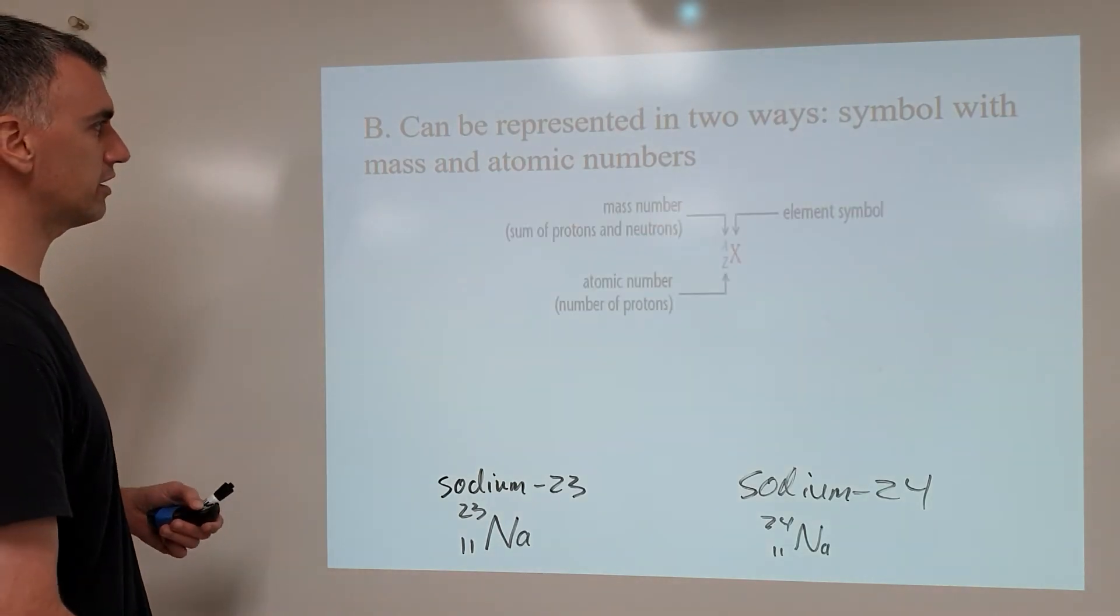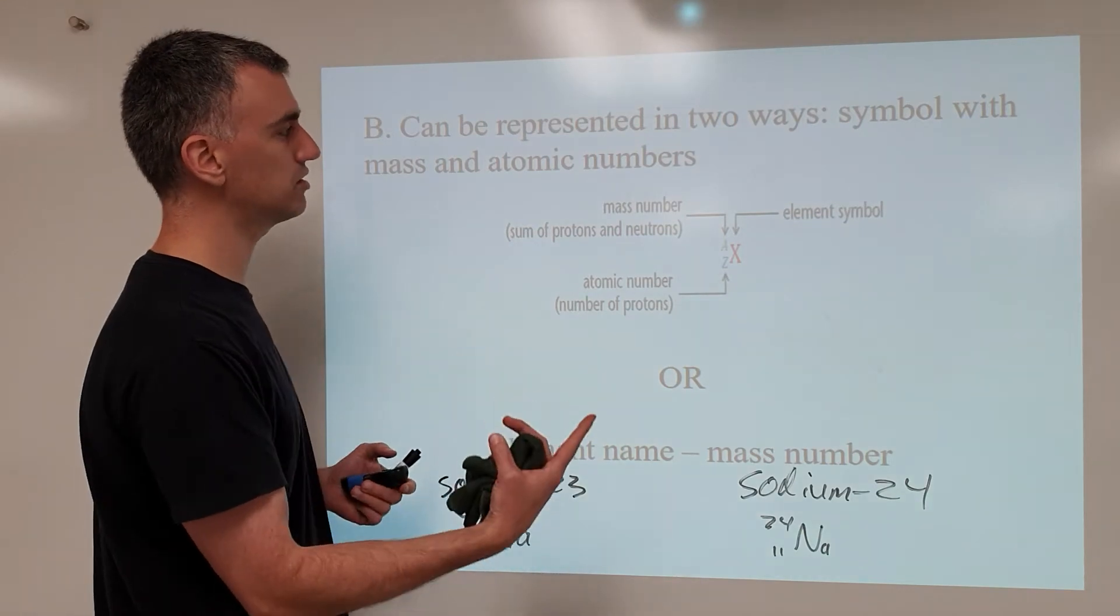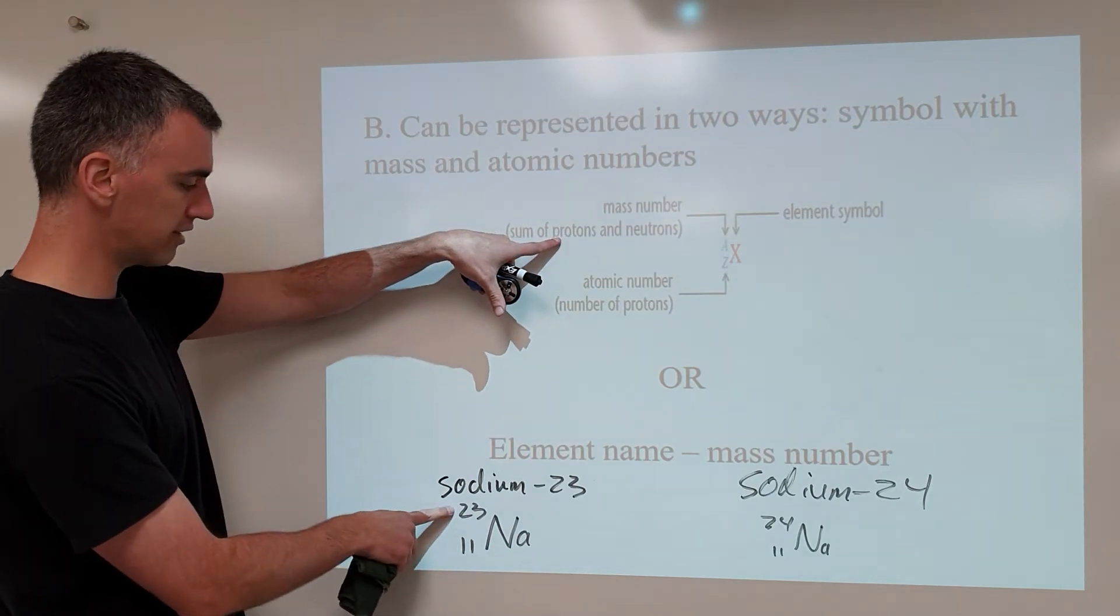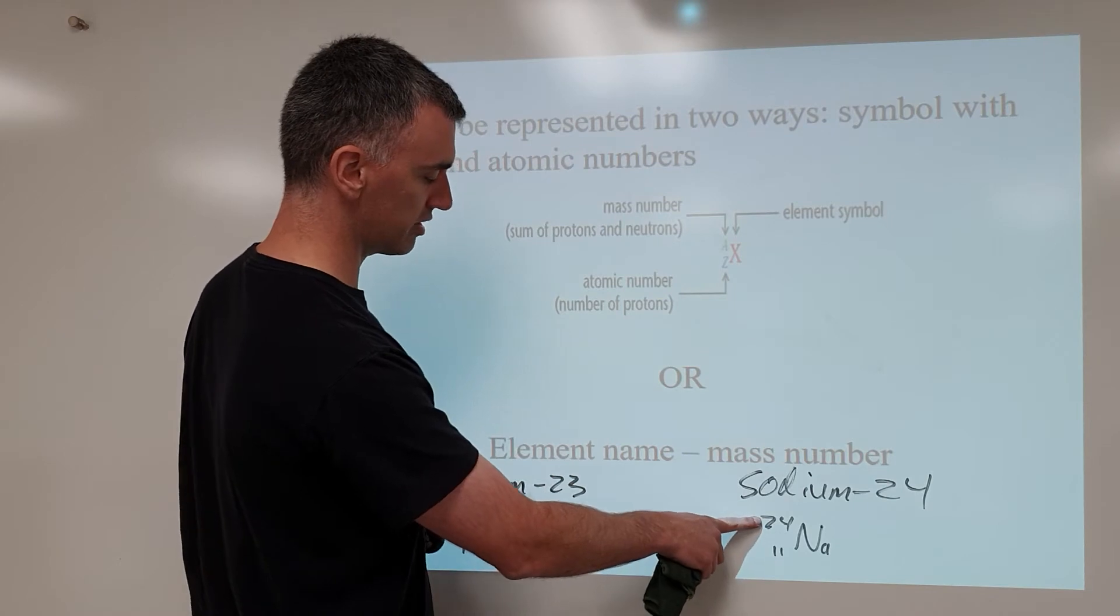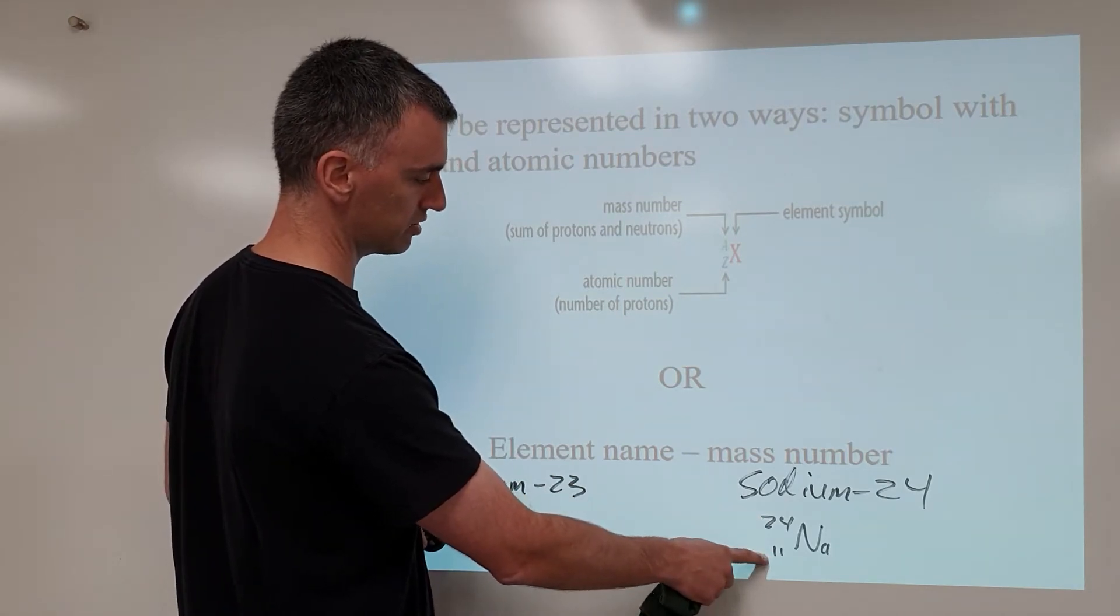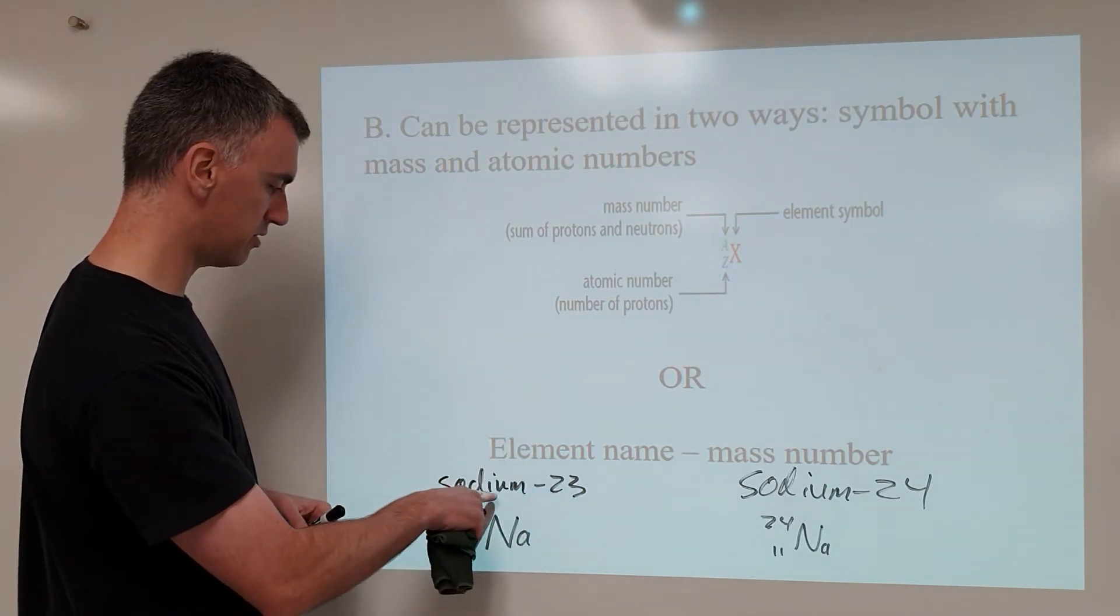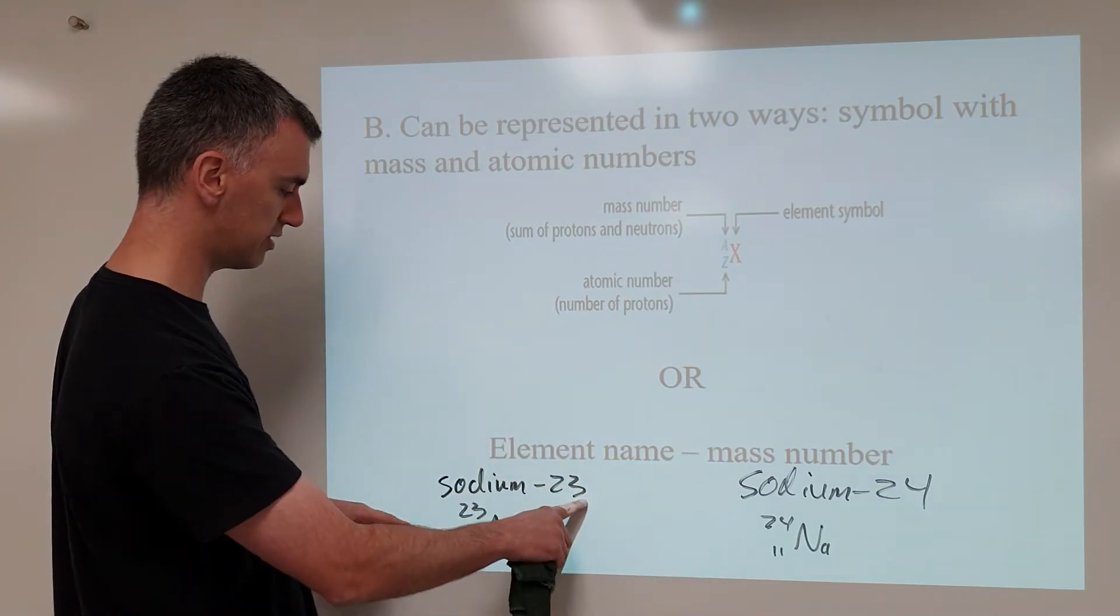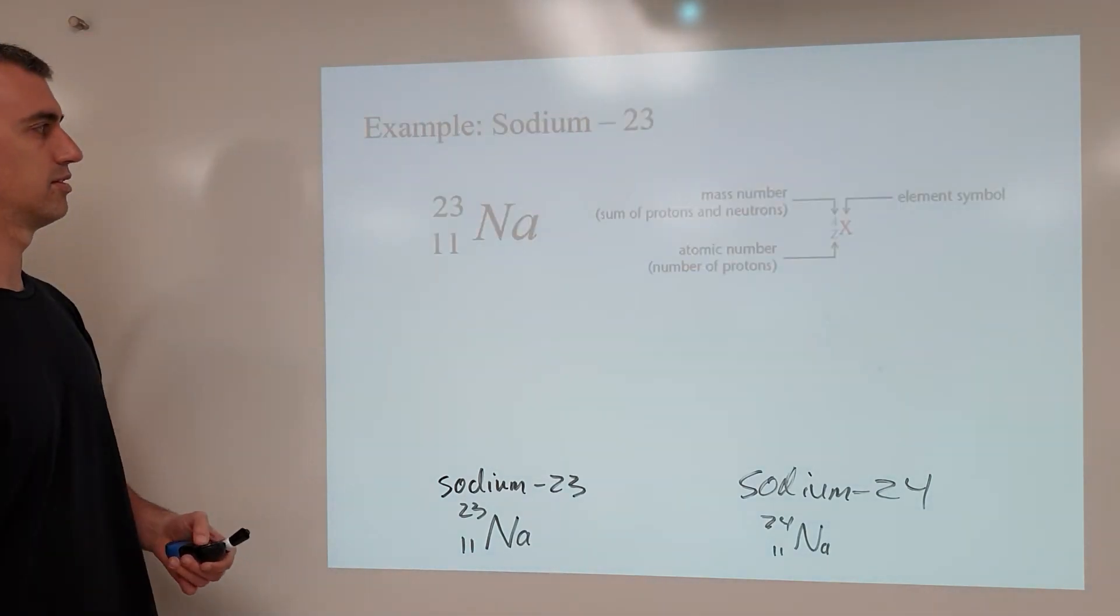Just like I was mentioning here, there are two ways of talking about these isotopes. You can have the element symbol with the protons and neutrons added together and the number of protons on the bottom. Or the element name, sodium, and the mass number, 23. The mass number means the total of protons and neutrons. So this and this will always be the same.